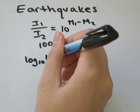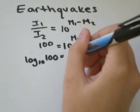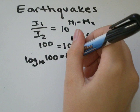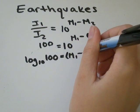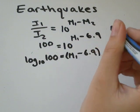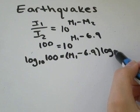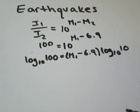So I'll go log base 10 of 100 equals, we have to use the power rule of logs, that says that the exponent comes out in front of our logs, as M1 minus 6.9 times the log of 10.